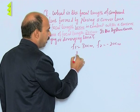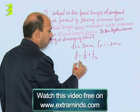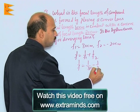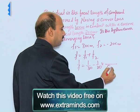First you find out the focal length: 1 upon F equals 1 upon F1 plus 1 upon F2. So 1 upon F equals 1 upon 30 minus 1 upon 20. That can be written here, LCM is 60.